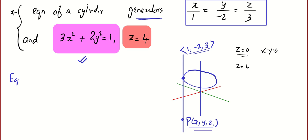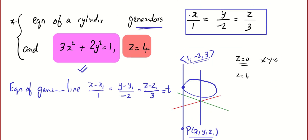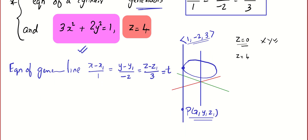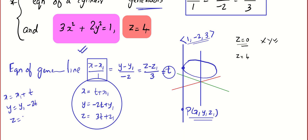We are going to write the equation of the generating line: (x − x1)/1 = (y − y1)/(−2) = (z − z1)/3 = t, where t is some parameter. We write it in parametric form, so we get: x = x1 + t, y = y1 − 2t, z = z1 + 3t.